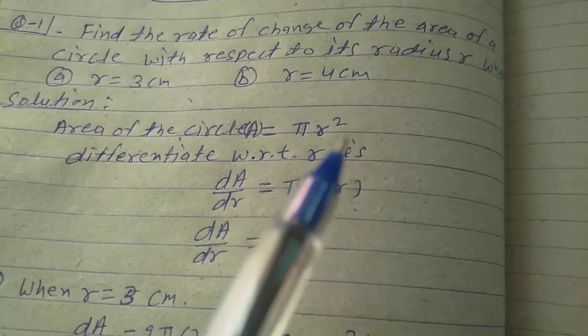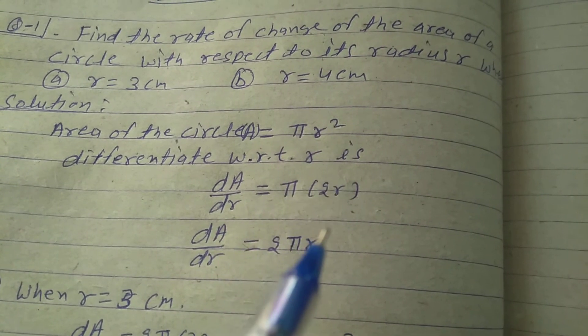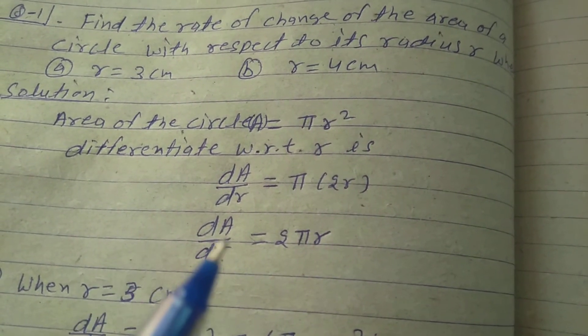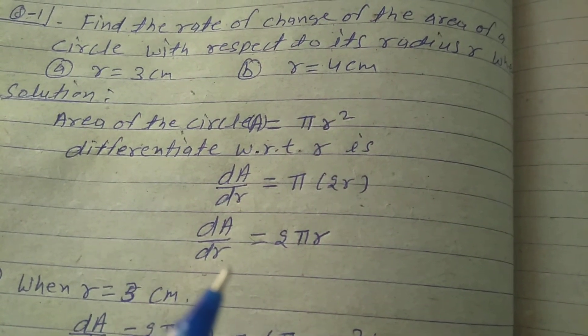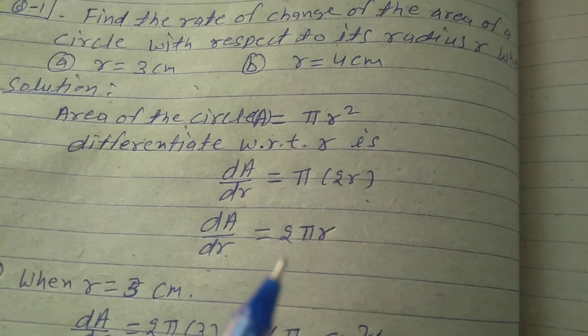Because differentiation of r square is 2r, dA upon dr is equal to 2 pi r.